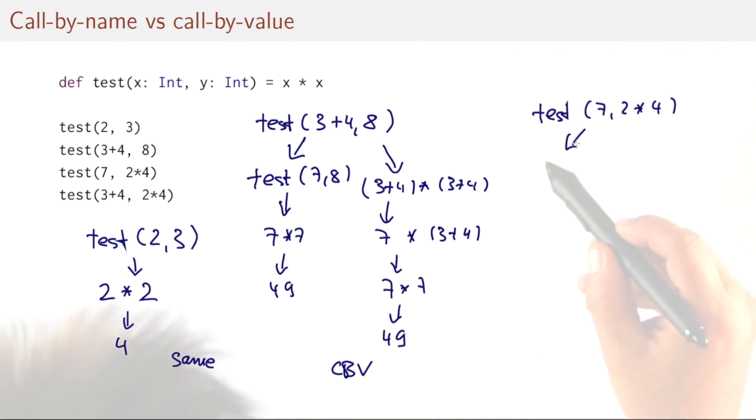Let's look at the third example. Test of seven and two times four. Here with call by value, we would get test of seven and eight. Finally, seven times seven, and the final result. Whereas with call by name, we would get seven times seven, forty-nine. So in this case, we have avoided the unnecessary computation of the second argument. And call by name is faster.